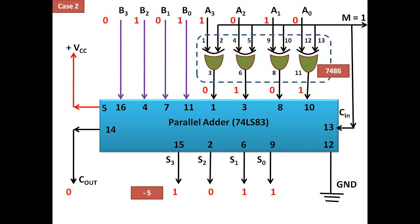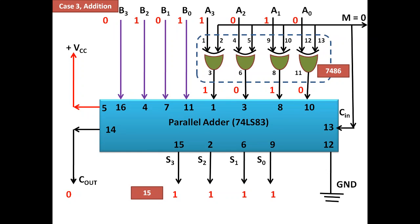Now let's take case number two: the minuend was 0101 and the subtrahend was 1010. Applying the same concept, we get the one's complement of 1010 as 0101, and since the carry-in is connected to M (which is 1), we add 1 to get 0110. When 0110 and 0101 are added, we get 01011 with no carry. When there is no carry, it shows this is a negative number, represented as minus 8 plus 2 plus 1, giving minus 5.